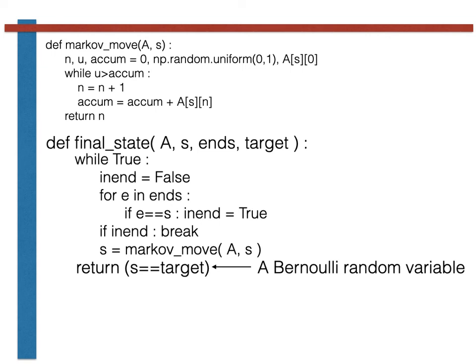The average that I obtain is then an estimate for the probability that the random variable is equal to one. If this particular random variable, the one generated by final_state, is equal to one, however, my chain will have terminated in the recurrent state.